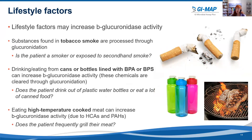Lifestyle factors may also increase beta-glucuronidase activity. Substances found in tobacco smoke are processed through glucuronidation, so consider whether the patient is a smoker or exposed to secondhand smoke. Drinking or eating out of cans or bottles lined with BPA or BPS can increase beta-glucuronidase activity since these chemicals are cleared through glucuronidation. Eating high-temperature cooked meat can also increase beta-glucuronidase activity due to carcinogenic compounds formed, such as HCAs and PAHs — so ask whether the patient frequently grills or chars their meat.